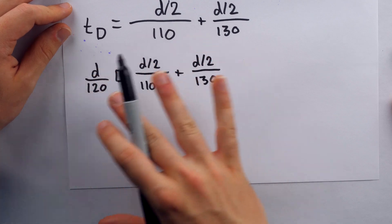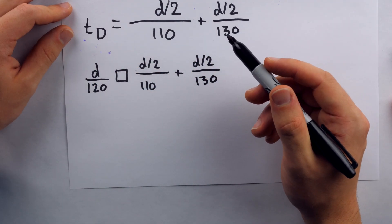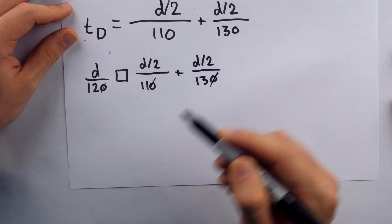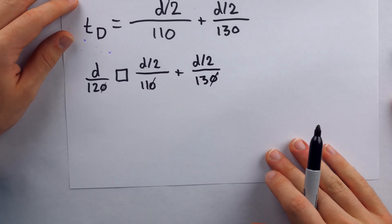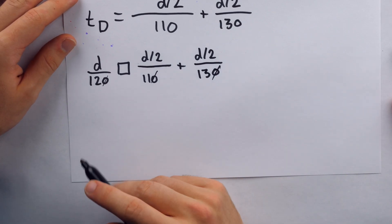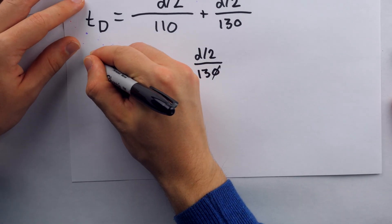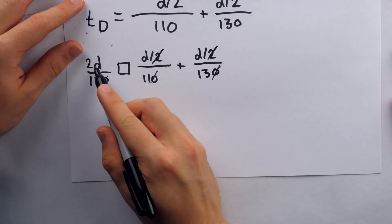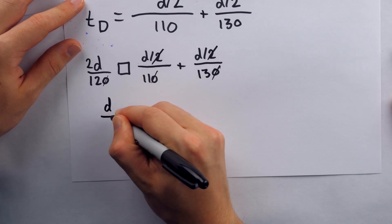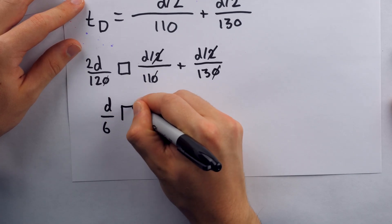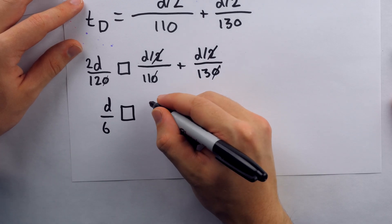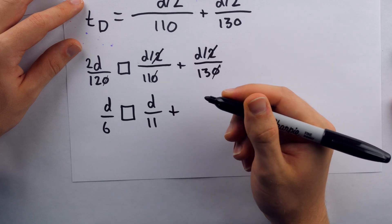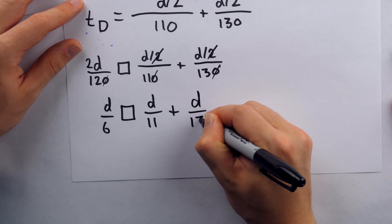Now to start reducing these fractions and to get these numbers to be more manageable, let's multiply everything by 10. You can see that that'll cancel out all of those zeros. Now that we've multiplied everything by 10 to get rid of those zeros, we might as well also double everything. If we double everything, we'll also get rid of those divisions by 2. So then on the left, 2d over 12, well we could reduce that to just d over 6. We don't know what the inequality sign should be there, so we'll just put the empty box. And then we have d over 11. That's what's left in that term. And then in this term, what's left is d over 13.